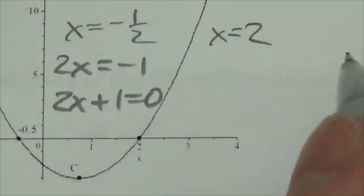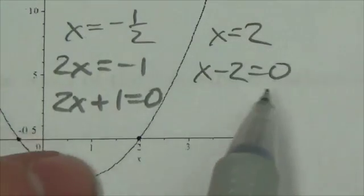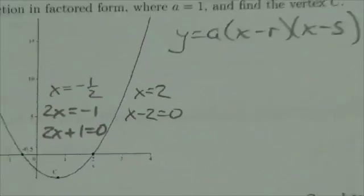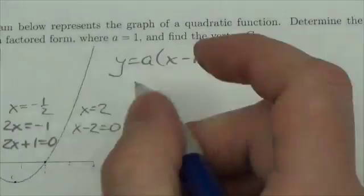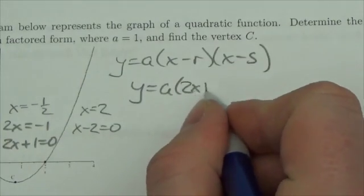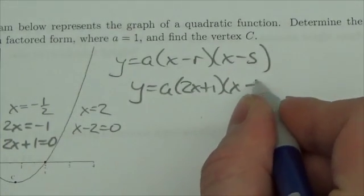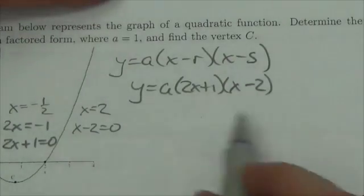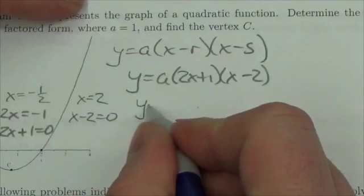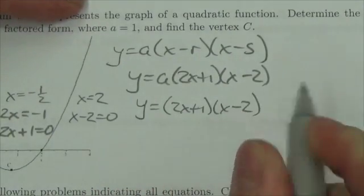The other root is x equals positive 2. So what I'm doing here is identifying the roots: x equals negative one half and x equals 2. Then I build the factors by pulling each over so it's equal to 0. These two become my two factors. So I can say y is equal to a times (2x plus 1) times (x minus 2). We're told the a value is 1, so that's y equals (2x plus 1)(x minus 2).